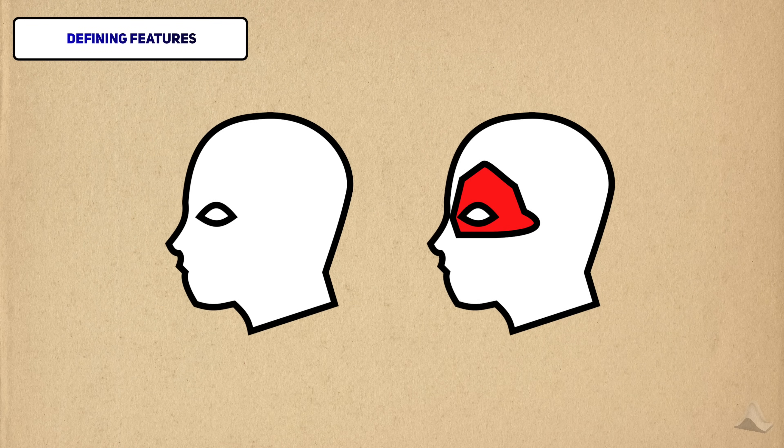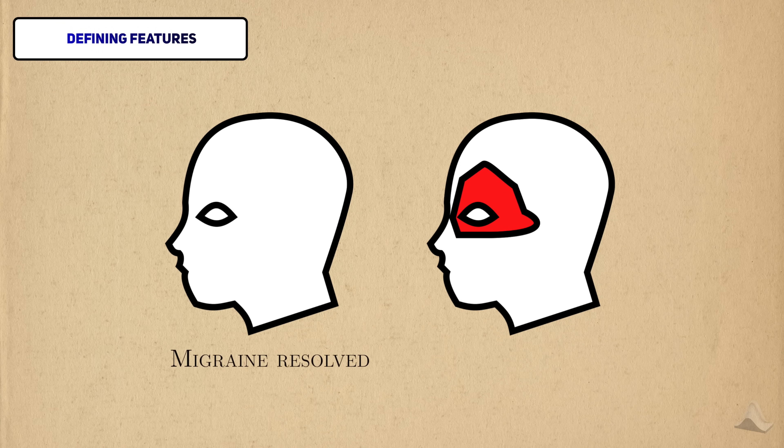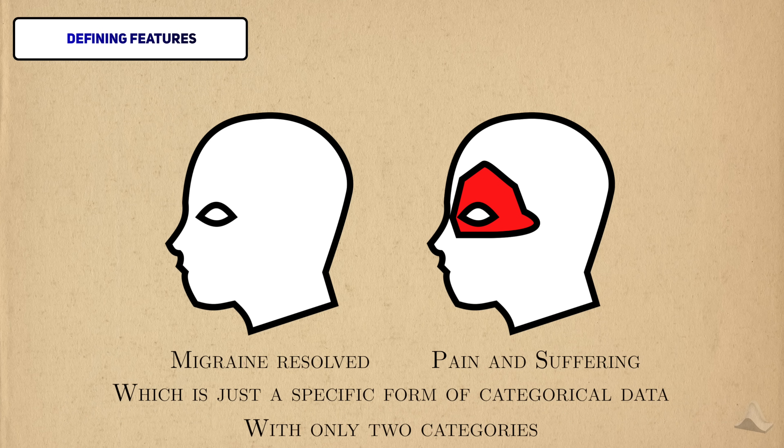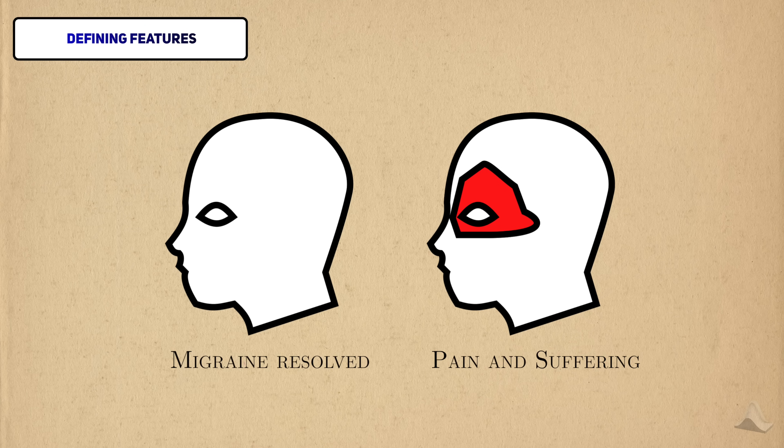What distinguishes this problem from past videos is the fact that our outcome is categorical. The migraine is either resolved or it's not. You can also think of this as a binary outcome. Binary data is really just a special case of categorical data, where the only two categories are true and false. General categorical data can have more than two categories.